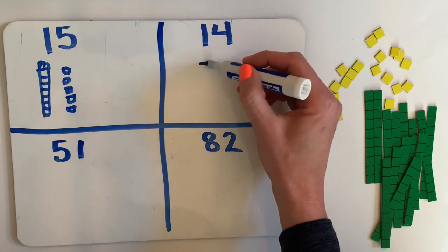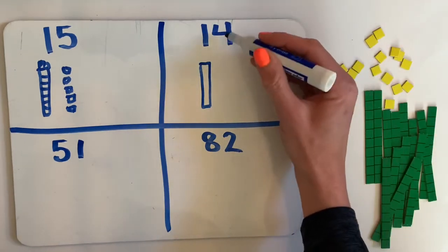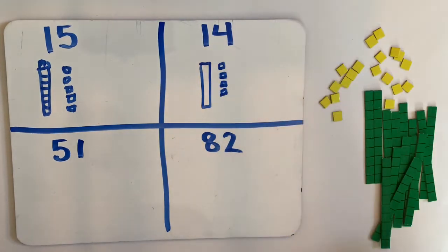So 14, that's one 10. I can draw my one long stick and four ones which are squares. 1, 2, 3, 4. That's 14.